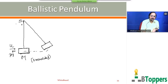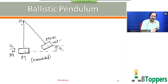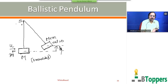After the collision, the combined mass rises through some vertical height h above the lowest position. If we can make some experimental arrangement to measure the vertical height h through which the combined mass rises after the collision, and if we know the masses of the bullet and block, we can measure the speed of the bullet before the collision.